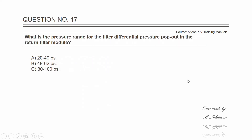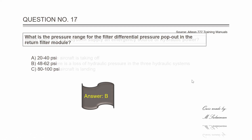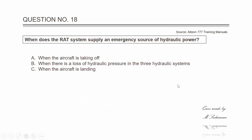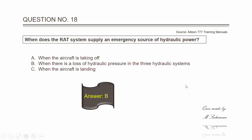Question number seventeen: what is the pressure range for the filter differential pressure pop-out in the return filter module? The answer is B — 48 to 62 PSI. Question number eighteen: when does the RAT system supply an emergency source of hydraulic power? The answer is B — when there is a loss of hydraulic pressure in all three hydraulic systems.